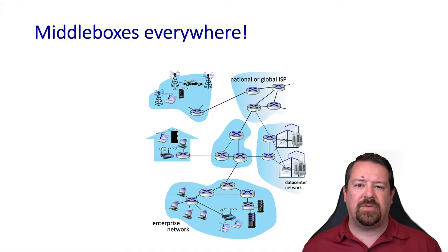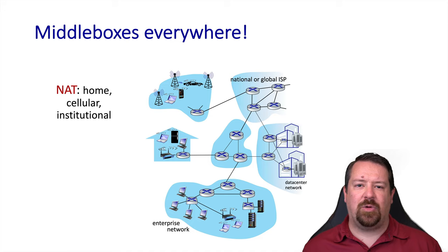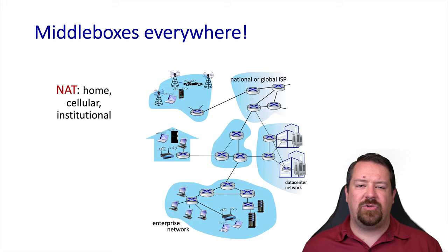Probably the most prevalent type of middlebox is NAT, Network Address Translation. NAT is a middlebox because it changes the port numbers in the transport layer header, even though the transport layer is only supposed to be manipulated at the end hosts. In addition to NATs in your home providing private addresses, many cellular ISPs also run NAT, and many institutions such as universities or enterprises run NAT for their whole organization to reduce the number of public IP addresses they need to purchase.